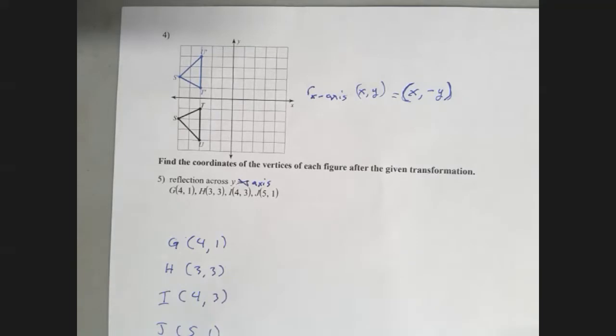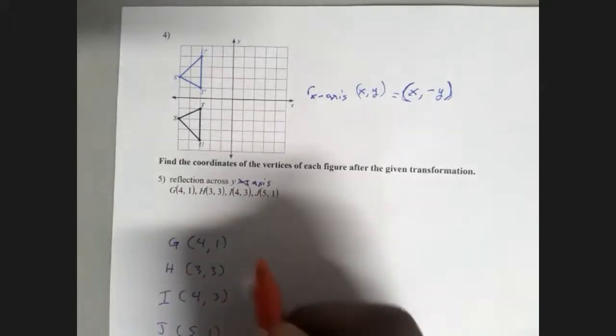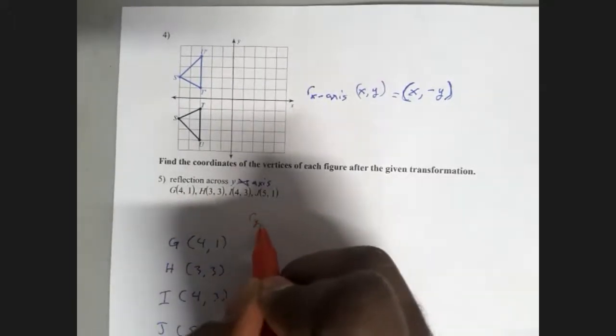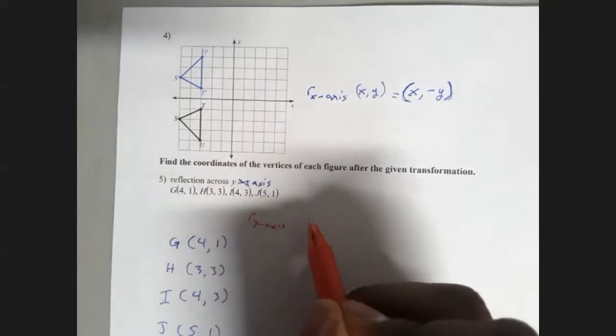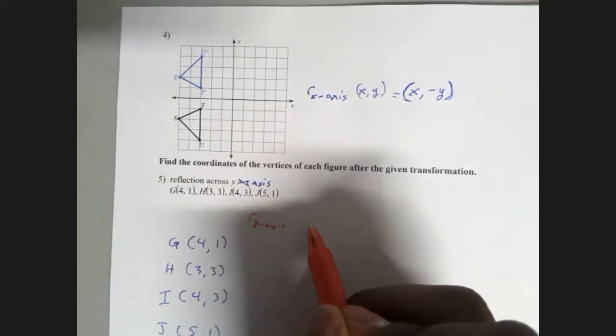Okay, so the transformation across the y-axis simply says r_y-axis. You don't have to write all this down, but I'm just writing it so everyone can see what the formula is.